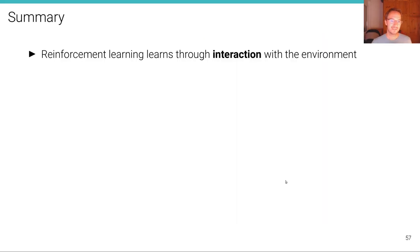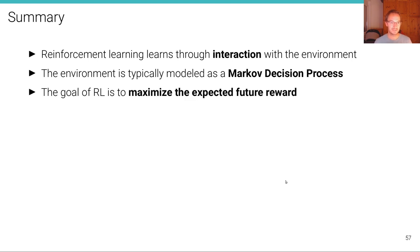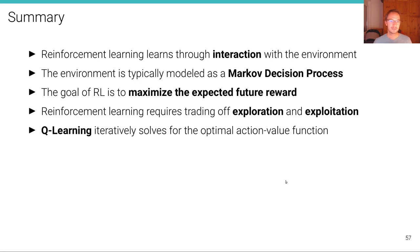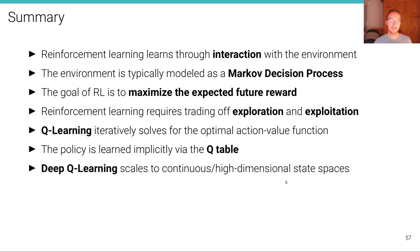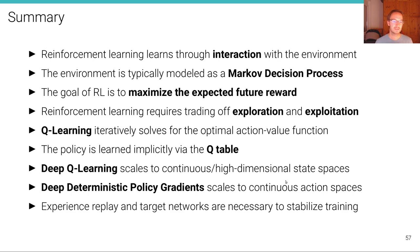To summarize: reinforcement learning learns through interaction with the environment, typically modeled as a Markov decision process, with the goal of maximizing expected future reward. RL requires trading off exploration and exploitation. Q-learning iteratively solves for the optimal action-value function but is limited. Deep Q-learning scales to continuous or high-dimensional state spaces, and deep deterministic policy gradients scales to continuous action spaces. Experience replay and target networks are crucial to stabilize training.